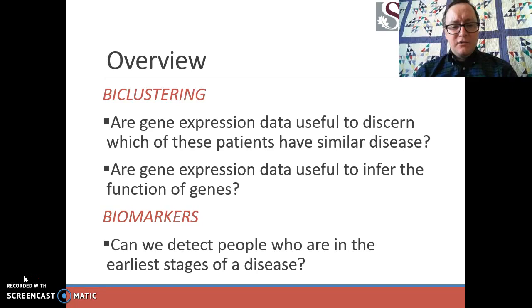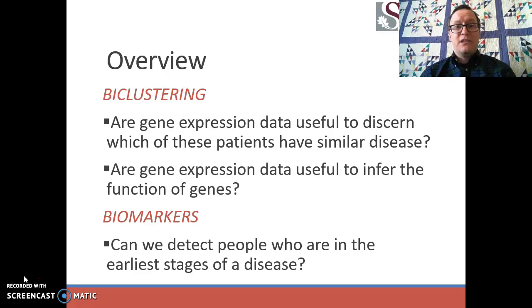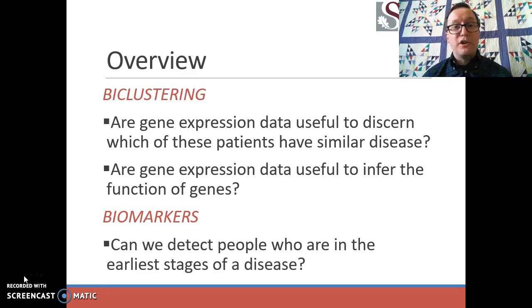Biclustering is useful when we're trying to discover which of our patients have similar diseases, so it's an exploratory technique. Clustering allows us to look into our data and see if patients fall in natural clusters, natural groupings within cohorts. From there, we can also look at the genes themselves — which genes take on particular functions or are active under certain conditions. So biclustering is useful in both of those contexts.